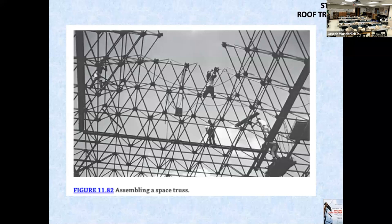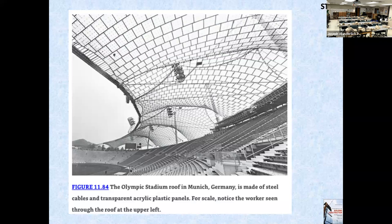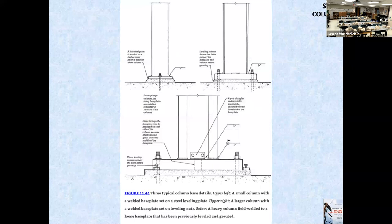This is a space truss — another example from the reference book. And here are some steel cables in a cable structure, in this case with transparent acrylic plastic panels. A structural engineer would specify this. An architect could handle a small one-story building — retail, strip center, commercial, industrial — but it's always best to have a structural engineer do these calculations.